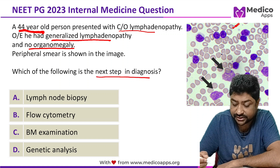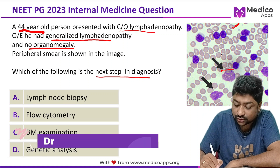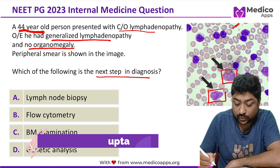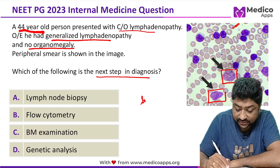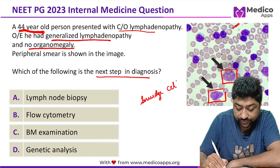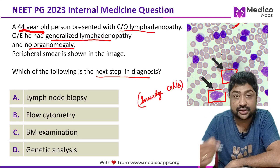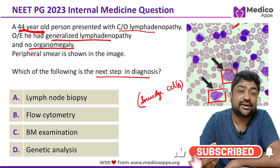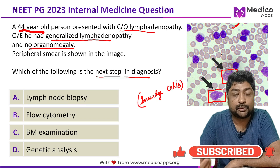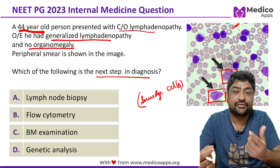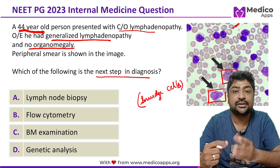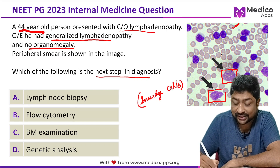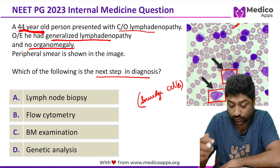Now let us look at the slide which is given. It has already been marked in the slide. What we see here are smudge cells. In this particular disease, there is a defective cytoskeleton maintenance protein, and because of that these cells are very fragile. When you are making a peripheral smear, these cells burst and that is why they smudge — that is why they form smudge cells.